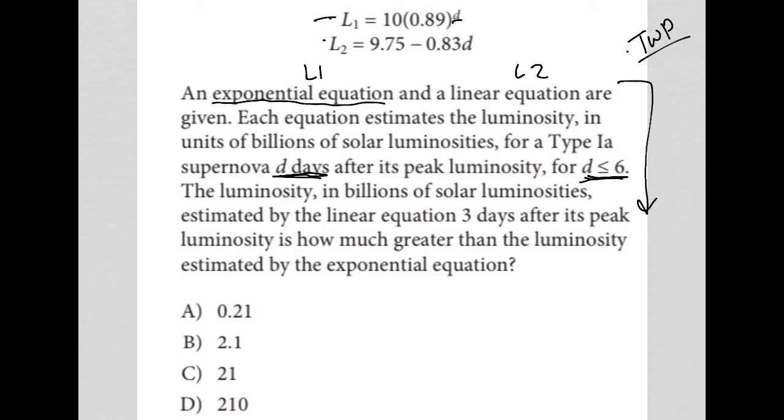The luminosity in billions of solar luminosities estimated by the linear equation three days after its peak. That's something to translate. What is the luminosity estimated by the linear equation three days after its peak?